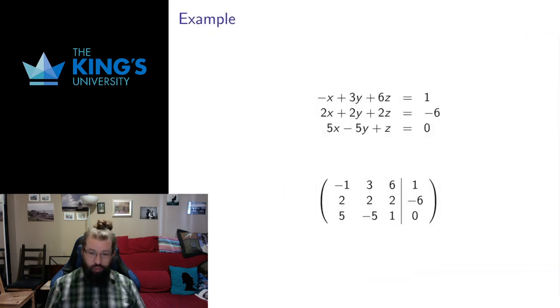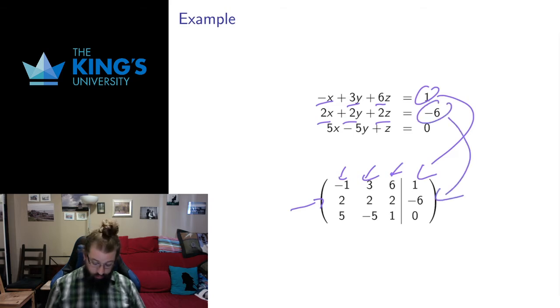Let me do some examples to make this clear. Here are three equations in three variables x, y, and z. Let's translate them into a matrix. So the coefficients here are negative 1, 3, and 6. Those show up as negative 1, 3, and 6. I've got my vertical separating line, and then my constant 1 shows up there. Here I have 2, 2, and 2. So this row is going to have 2, 2, and 2. And its constant, negative 6, shows up there.